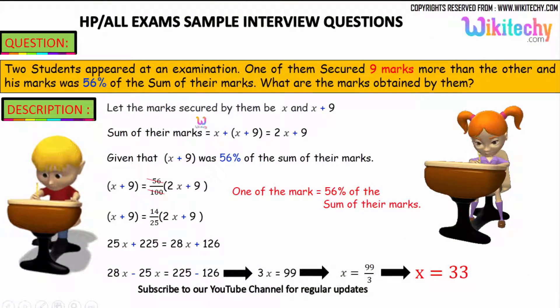The marks secured by them are X and X plus 9, because one of them secured nine marks more than the other. The sum of their marks is X plus X plus 9, which gives us 2X plus 9.